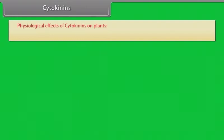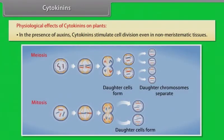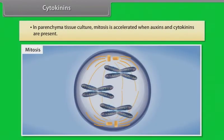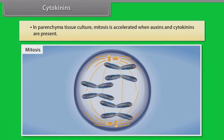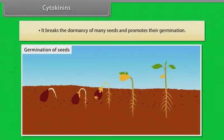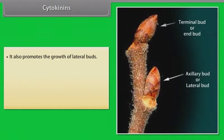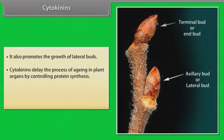Cytokinins. Physiological effects of cytokinins on plants: in the presence of auxins, cytokinins stimulate cell division even in non-meristematic tissues. In parenchyma tissue culture, mitosis is accelerated when auxins and cytokinins are present. It breaks the dormancy of many seeds and promotes their germination. It also promotes the growth of lateral buds. Cytokinins delay the process of aging in plant organs by controlling protein synthesis. It also helps in accumulation of salt in plant cells.